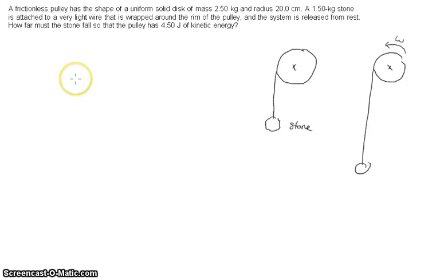Here we have a frictionless pulley the shape of a uniform solid disk, mass 2.5 kg radius of 20 cm. A 1.5 kg stone is attached to a very light wire that's wrapped around the rim, and it's released from rest. So this would be your initial picture, and this here would be your final picture.